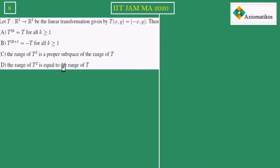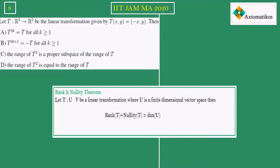This is a very easy question just dependent on basics from linear algebra. First, I should show you a note with a very important result. This result is known as the rank-nullity theorem. It states that let T: U → V be a linear transformation where U is a finite dimensional vector space, then rank of T plus nullity of T is equal to dimension of U. This is a very important result from linear algebra and we will use this later.